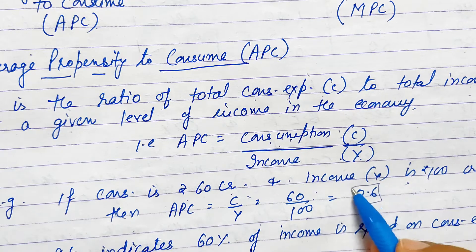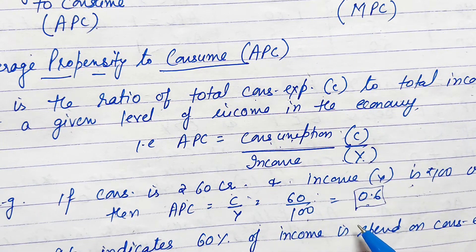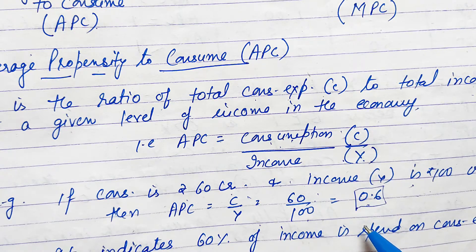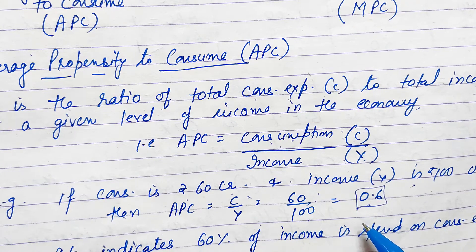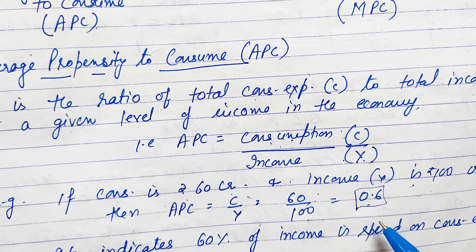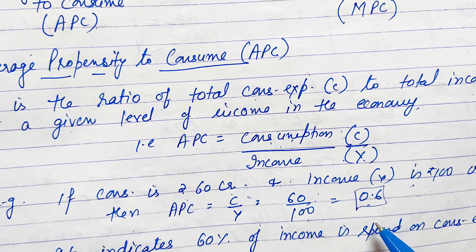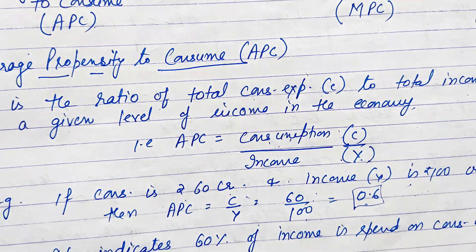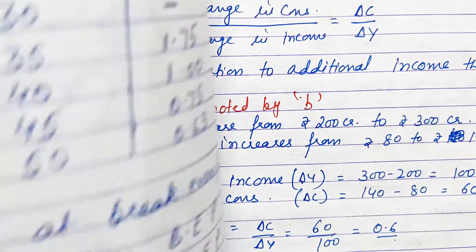Now what does this 0.6 indicate? It indicates that 60% of the income is to be spent on consumption expenditure in the economy. This is the APC of the whole economy — if income is 100, then 60% i.e. 60 crore is being spent on consumption. If income is 200, then 120 will be spent; if 300, then 180 — meaning 60% to be spent on consumption expenditure. This is what APC tells us. Now we can discuss its behavior with the help of a schedule.